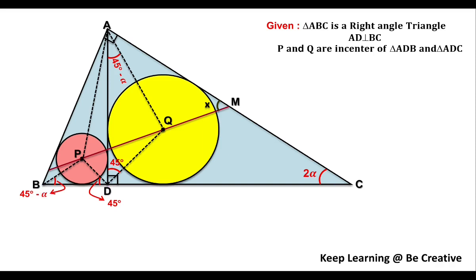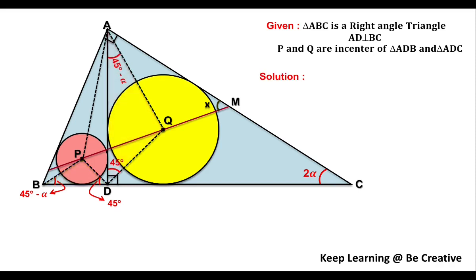We can observe that triangle AQD and triangle BPD will be similar, as they share two angles: 45 minus α and 45 degrees. So these two triangles will be similar by the angle-angle criteria. Let's write down the solution now.